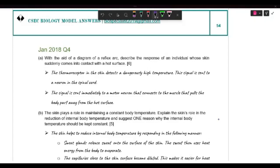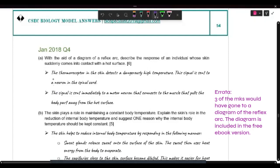So I know my answer is a little short, so I'll expand on it a little bit. So the first thing is that the thermoreceptor in the skin detects the dangerously high temperature signal sent to a neuron. So in this case, I would add a sensory neuron.